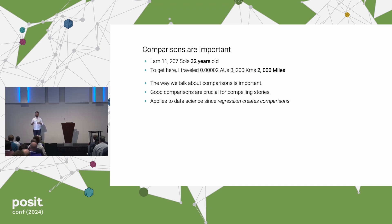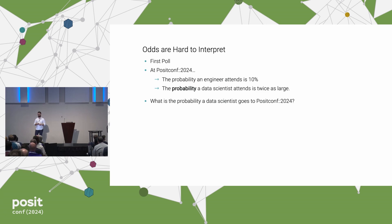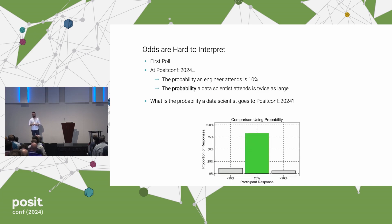Now, not every comparison which comes out the other side of a regression is immediately understandable. Take, for example, logistic regression — it talks about comparisons in terms of odds ratios. I'm going to argue that is a really bad way to talk about comparisons. I ran two polls on that bird website. The first poll gave hypothetical information about data scientists and engineers and their attendance rate at this conference. The probability an engineer attends posit::conf is 10%, and the probability a data scientist attends is twice as large. I asked participants what the numerical probability is that a data scientist goes to posit::conf — and you can see that most people get the correct answer, highlighted in green. Two times 10% is 20%.